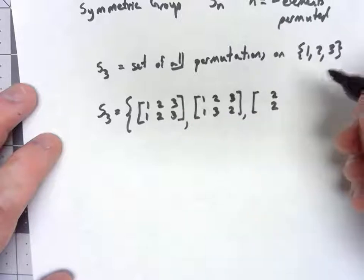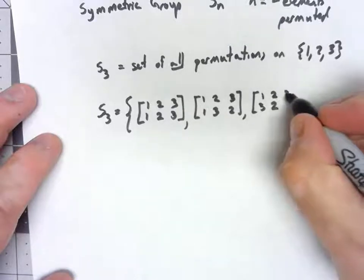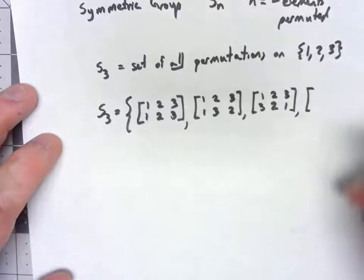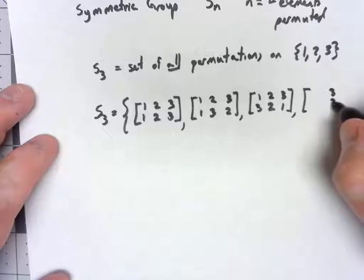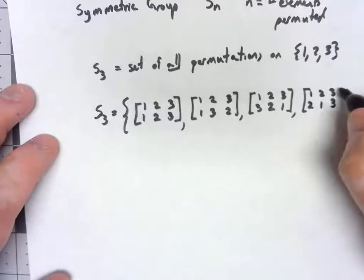Similarly, if we keep 2 fixed, it could be the identity, or 1 could go to 3, 3 could go to 1. If 3 is fixed and it's not the identity, 1 has to go to 2, 2 has to go to 1.